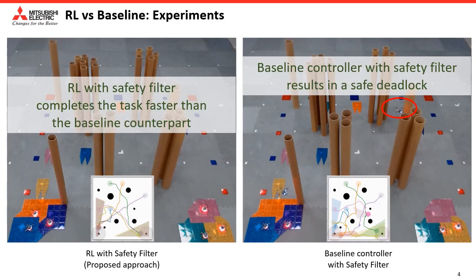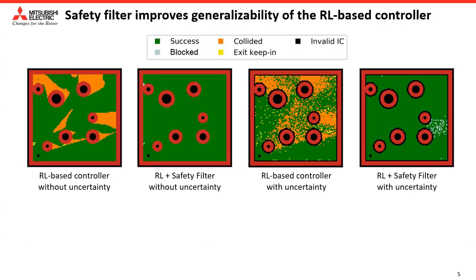The key takeaway is that the use of RL helps speed up the task completion time while reducing the risk of entering deadlocks. Next we evaluate the ability to navigate a single agent to the target shown on the bottom left of the plots while avoiding obstacles. We compared the proposed combination of RL plus safety filter with the standalone RL based controller both in the absence and presence of uncertainty.